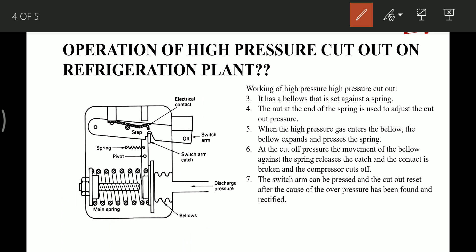As already discussed, it has a bellow which is set against a spring, this main spring. The nut at the end of the spring is used to adjust the cutout pressure. When the high pressure gas enters the bellow from this discharge connection, the bellow expands and presses the spring in this direction.